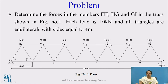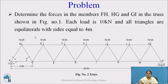Now we will see how to find out the forces in members by method of section. In this problem, determine the forces in members FH, HG, and GI in the truss as shown in figure 1. Each load is 10 kN and all triangles are equilateral with sides equal to 4 meters. From this entire truss, you have to find out the forces in only these three members.